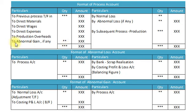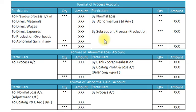It is important to understand that abnormal loss and abnormal gain can never occur together. Either there would be an abnormal loss or there would be an abnormal gain in the process — both cannot occur simultaneously. Abnormal loss is an unexpected loss or loss beyond normal loss, whereas abnormal gain is loss below the normal loss. Finally, the process account gets balanced and closed.